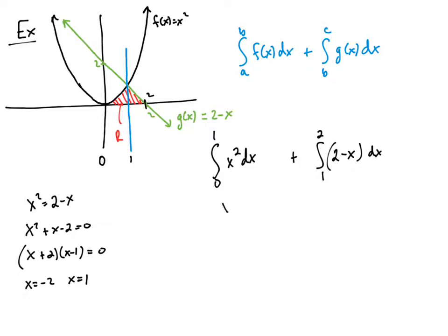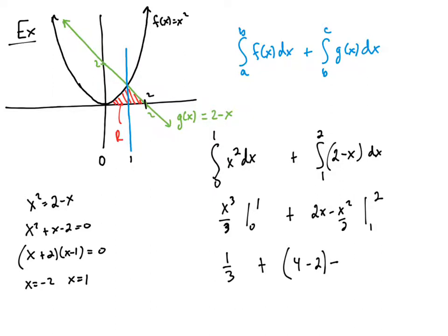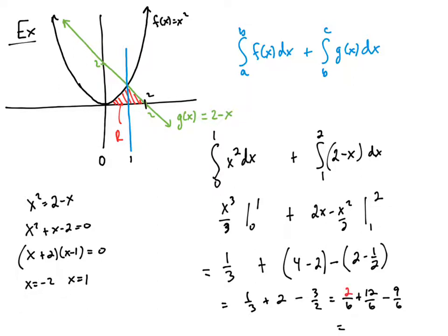Integrating: x³/3 evaluated from 0 to 1 gives 1/3, plus 2x − x²/2 evaluated from 1 to 2, which gives (4 − 2) − (2 − 1/2) = 2 − 3/2. So we have 1/3 + 2 − 3/2. Getting a common denominator of 6: that's 2/6 + 12/6 − 9/6 = 5/6.